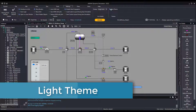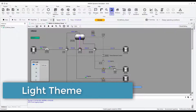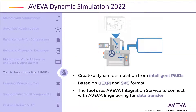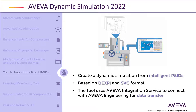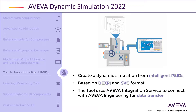Also from the settings tab in the ribbon bar, the user can switch to light theme. We now have an internal tool for importing intelligent P&IDs into the simulation. This can read DEXP and SVG formats. The same tool is also using the integration service to connect to Aviva Engineering for transferring data.